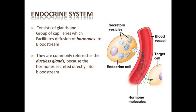Endocrine glands secrete their products directly into the blood. The blood travels through channels — blood vessels, arteries, and capillaries — which is why the endocrine system involves a group of glands and capillaries working together in this system.